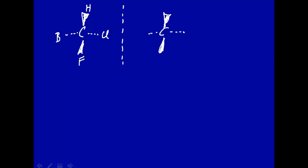If you put a mirror plane here and look at the mirror image of this carbon that has four different things bound to it, the mirror image has Cl here, H still here, F here, and Br — that's bromine, not boron — here. You then try to superimpose this mirror image on top of the original image, and what you find is that you can't do it. So this molecule exhibits chirality.